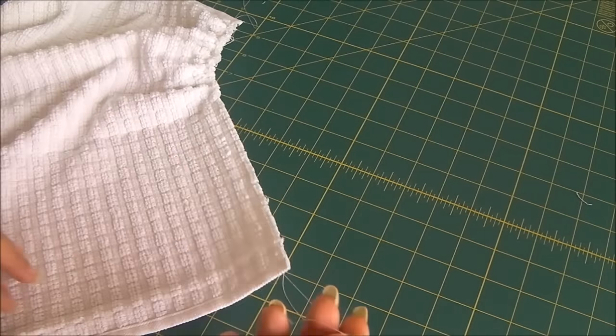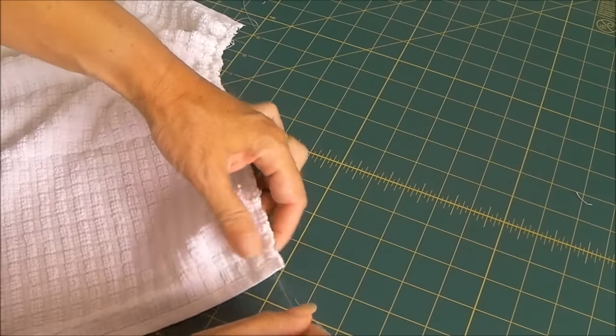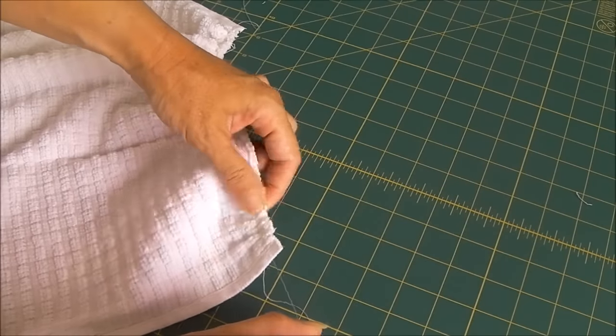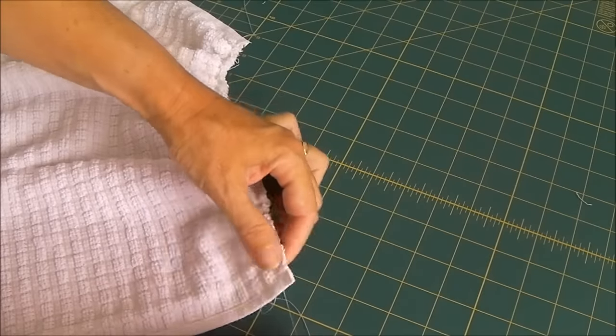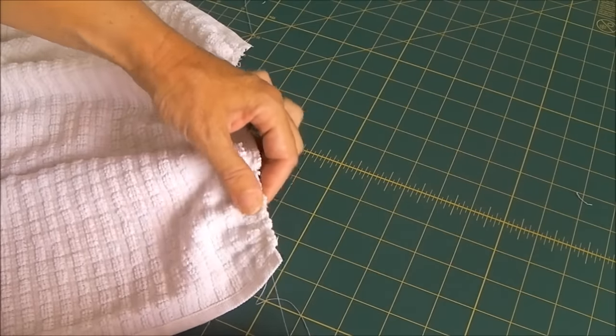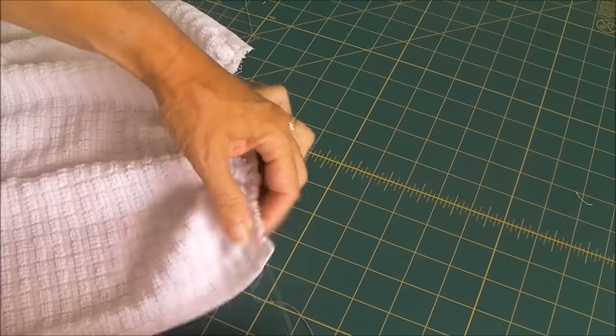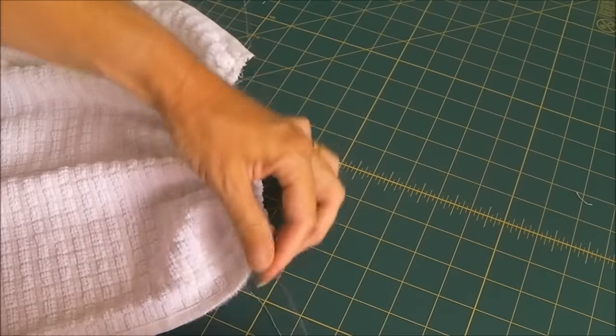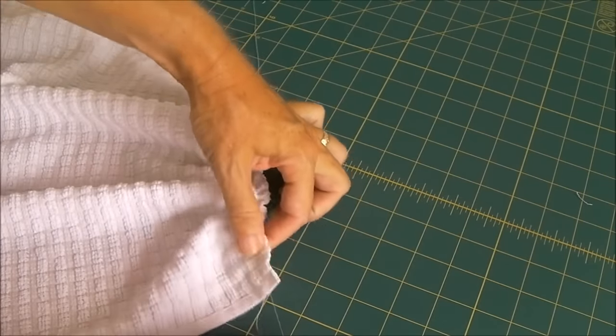Now my basting or gathering thread is in place. I just need to gather up by pulling on that thread and just gently moving it through the fabric. It can be quite hard on a toweling like this because the fabric is quite thick.